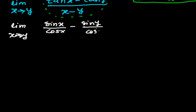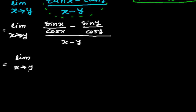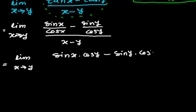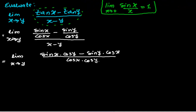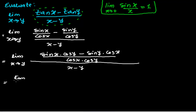So we get sin x over cos x minus sin y over cos y, all divided by x minus y. In the next step, combining over a common denominator, the numerator becomes sin x times cos y minus sin y times cos x, and the denominator is cos x times cos y, all divided by x minus y.